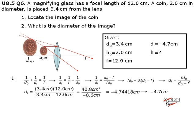Now that we have found the distance of the image is negative 4.7 centimeters, we can write that down in our given box.